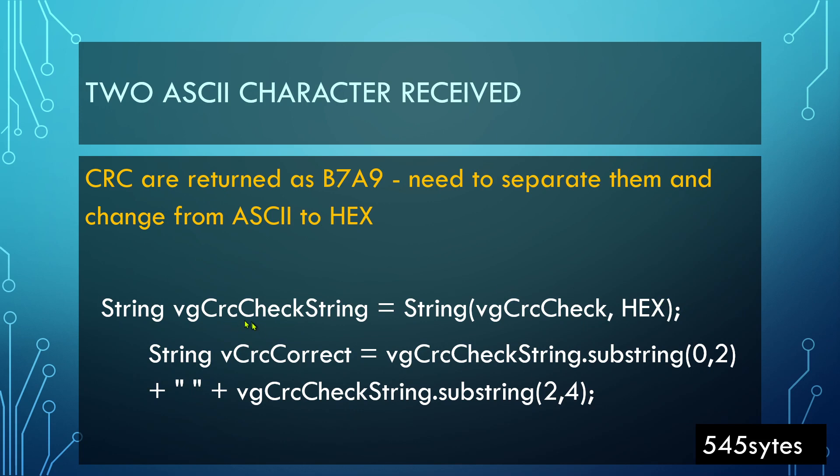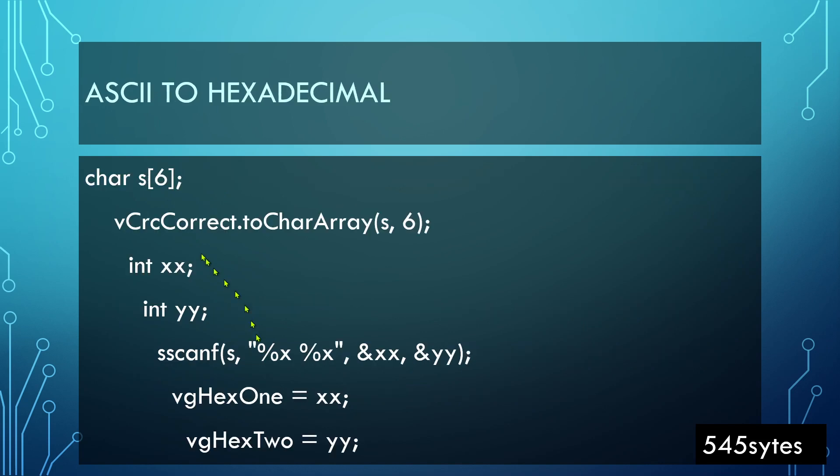The crcCheckString was broken into parts with space separating them. The new one is vCrcCorrect, this is the new variable. Now this vCrcCorrect we need to convert this string into hexadecimal. To do that I have declared an s array with six characters, and this string crcCorrect is converted into char array. The char array is s now.